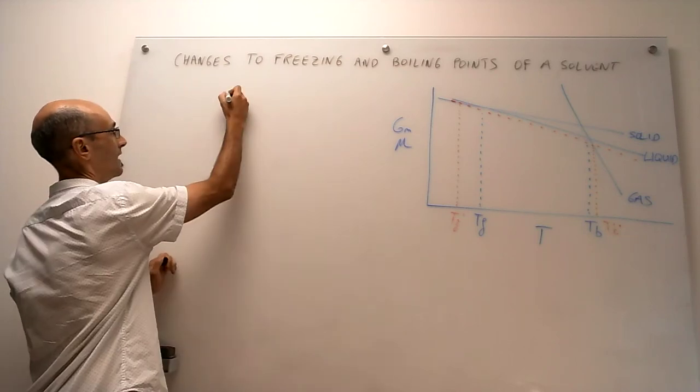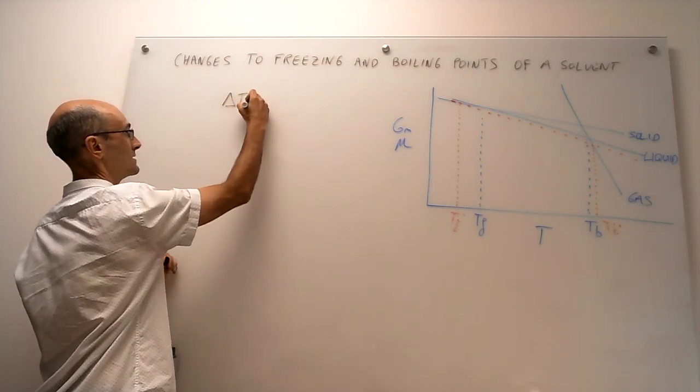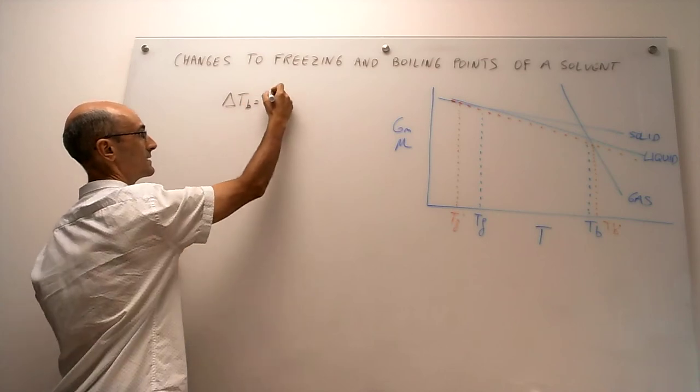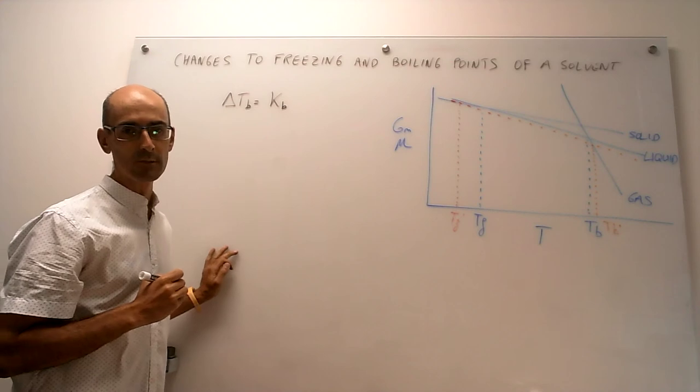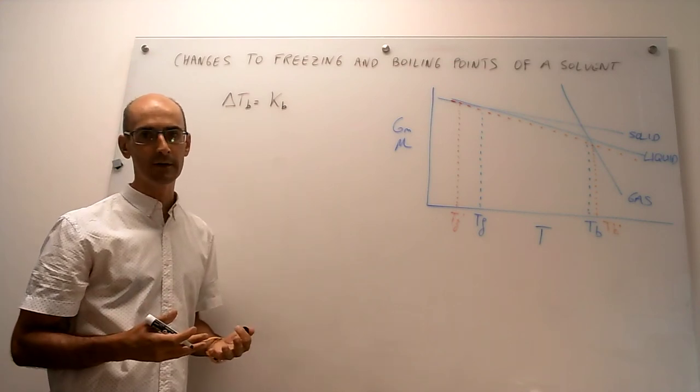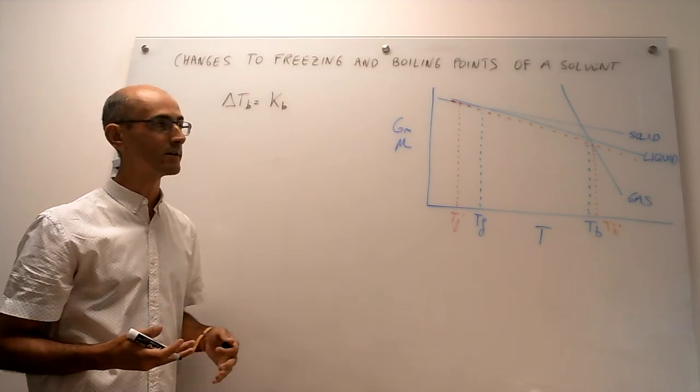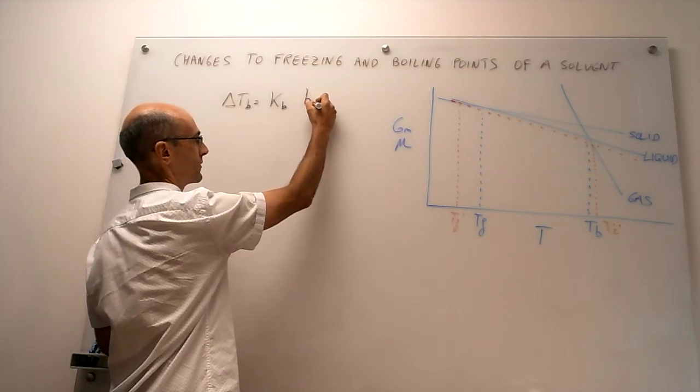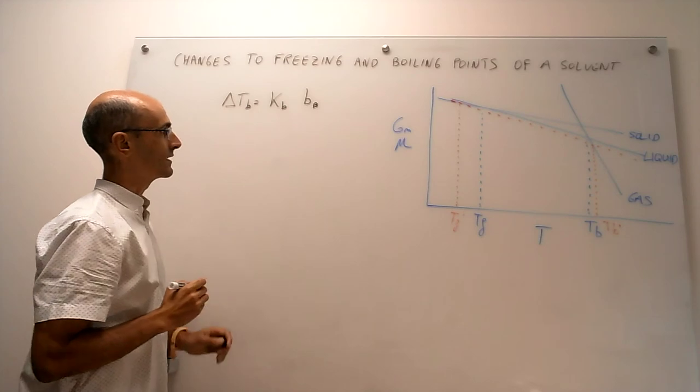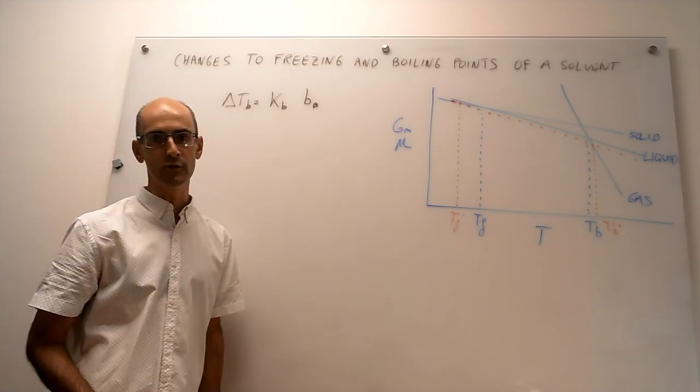As a matter of fact, they simply look like this. The change to the boiling point is simply a constant, which we're going to call capital KB, and this is called the ebullioscopic constant, or the boiling point constant, times the molality of the solution, which we can write simply as lowercase b of the solute B.